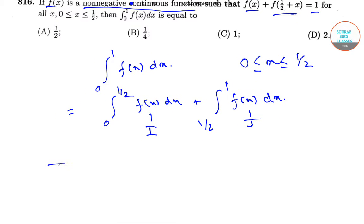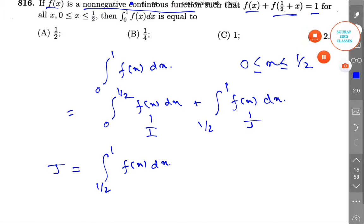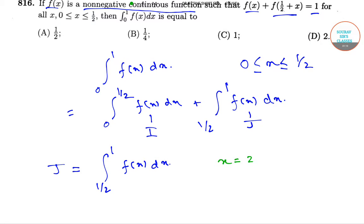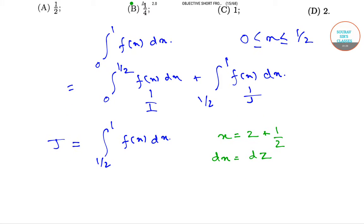So we have J equals integration 1/2 to 1 f(x) dx. Now let x equals z plus 1/2, then dx equals dz. When x equals 1/2, z equals 0, and when x equals 1, z equals 1/2.